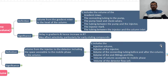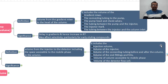The components that account for the void volume are: injection volume, volume of the injector, volume of the connecting tubing before and after the column, volume of the end fittings and frits, volume of the column accessible to the mobile phase, and volume of the detector's flow cell.